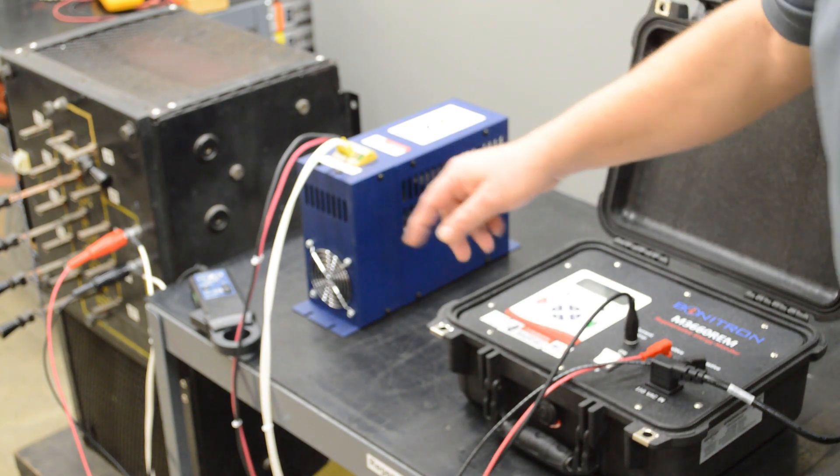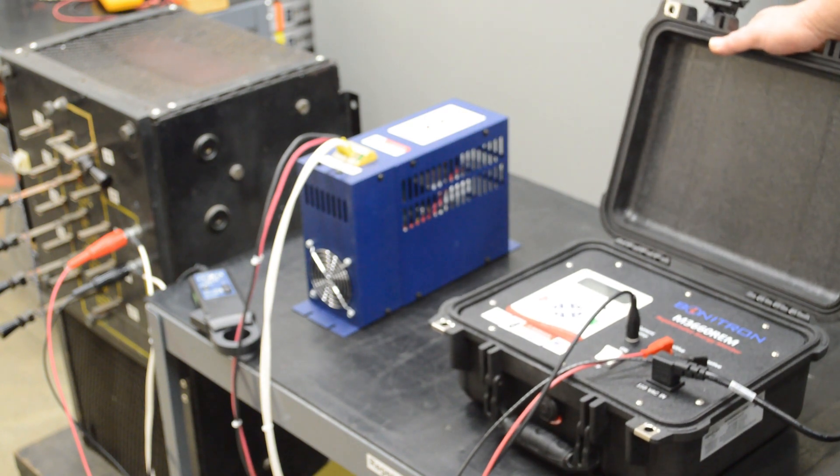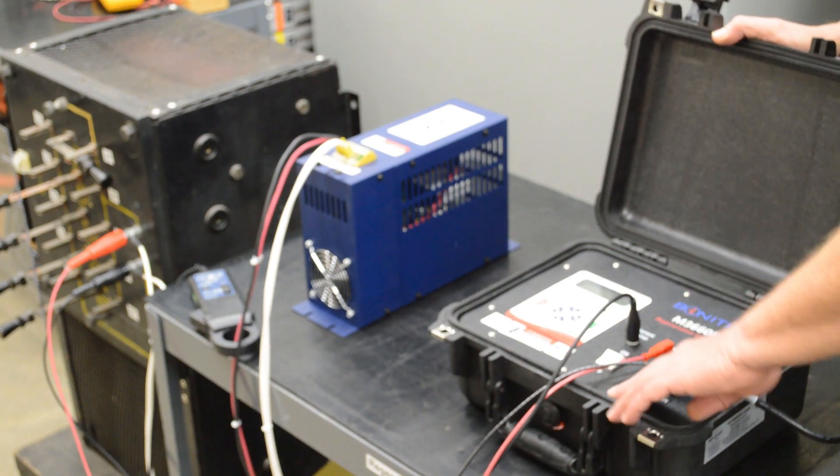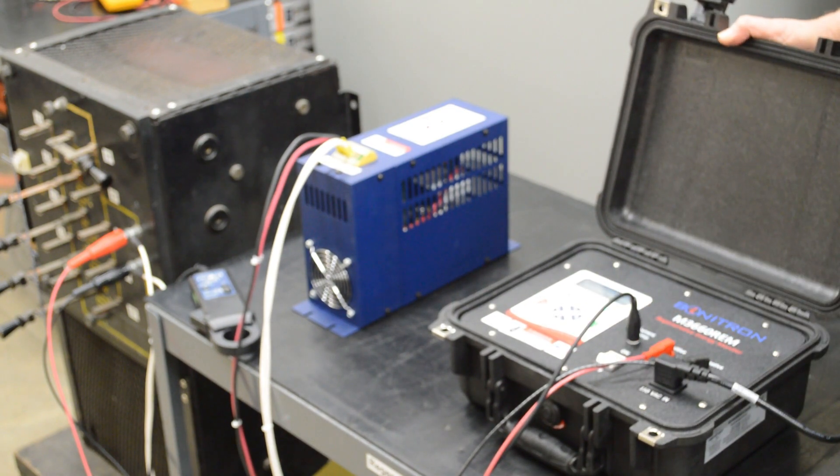Then we have a current clamp that we connect around the DC bus cables that go from the transistor. On and off switch, and we're going to turn it on now, and now we're going to look at the menu.